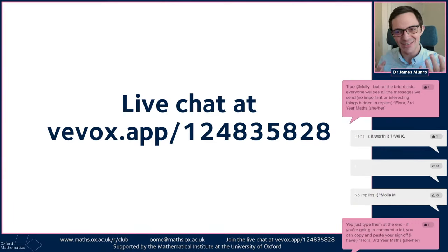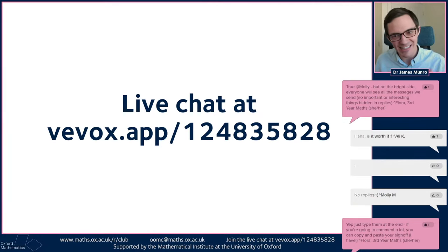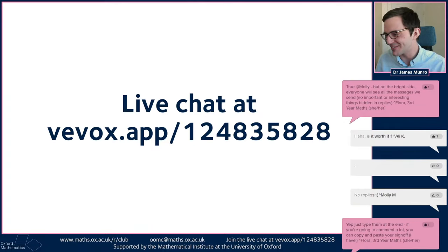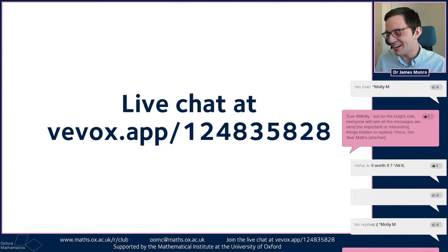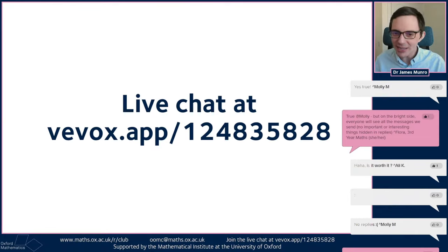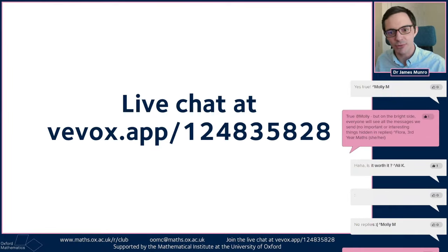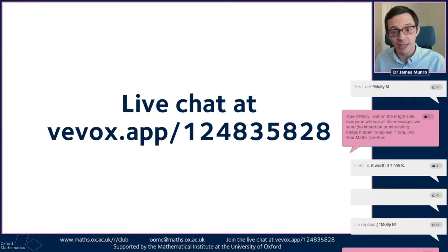The live chat link is vbox.app slash 124835828, or you can type in the nine-digit event code if you go to vbox.com or vbox.app. And when it gave me a nine-digit number, my first question was of course: is this prime? Unfortunately it's not a prime number.